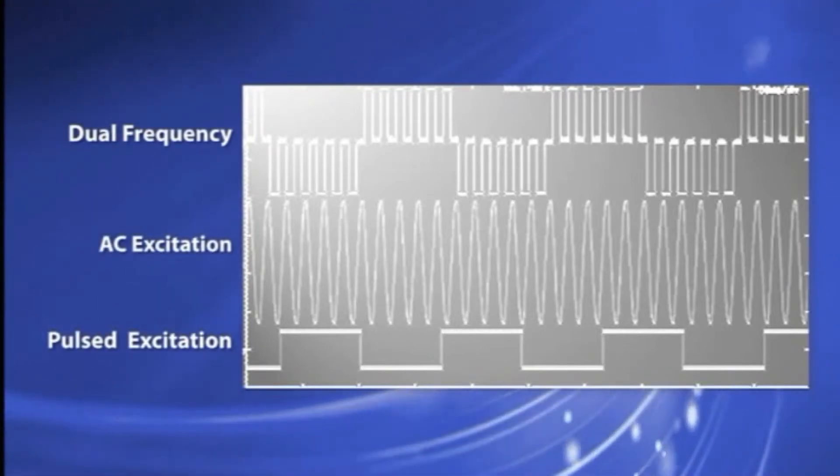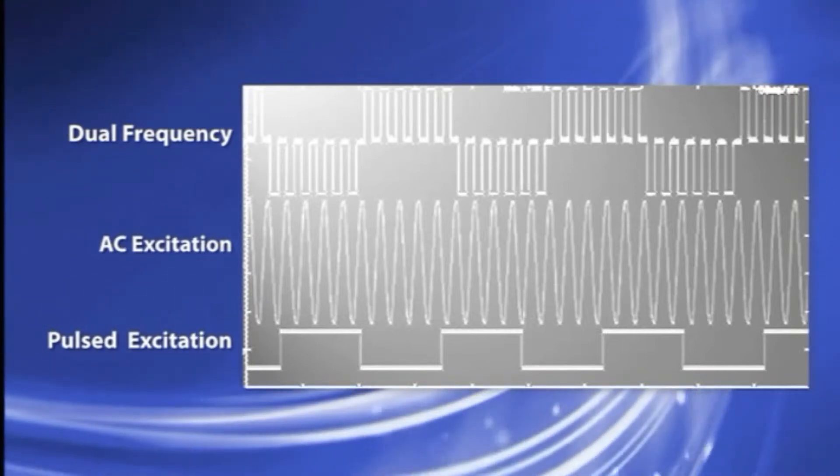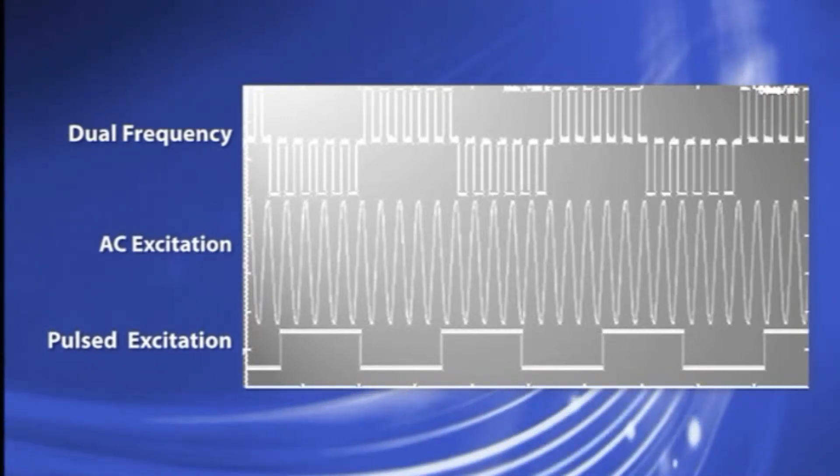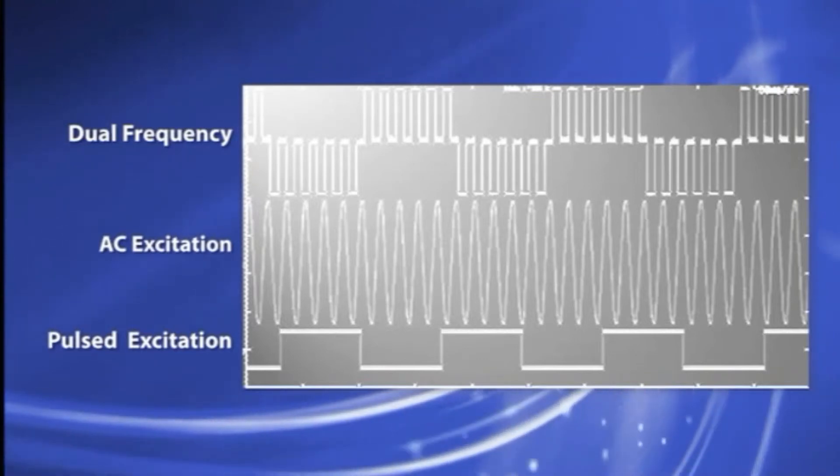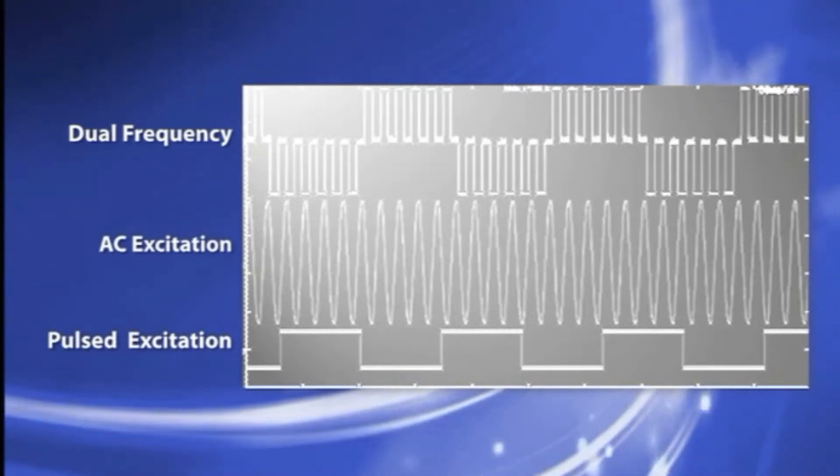Dual frequency excitation combines the positive benefits of both AC and DC excitation, using both a high 75 hertz frequency and a low frequency excitation of approximately 6 hertz to drive the coils.